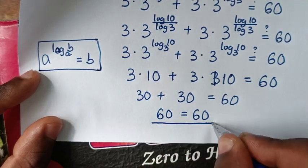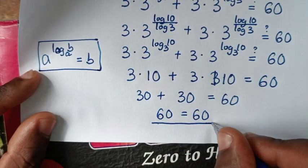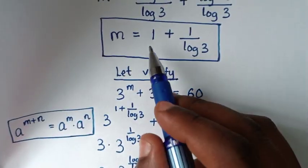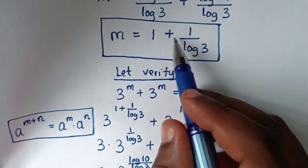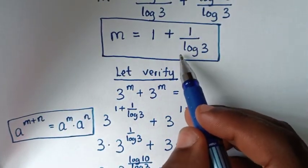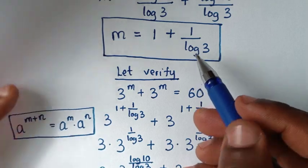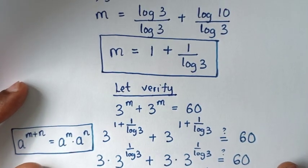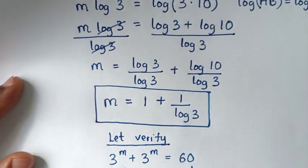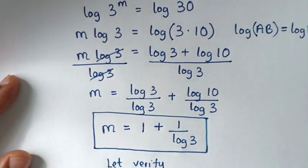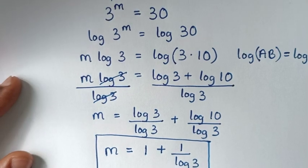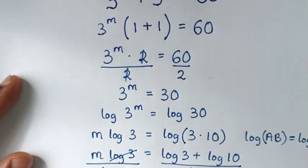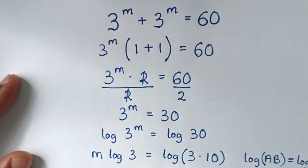The left side and right side are equal, confirming our answer is correct. The value of m is 1 plus 1 over log of 3. Thank you, don't forget to subscribe to the channel, and see you in the next video. Bye bye.